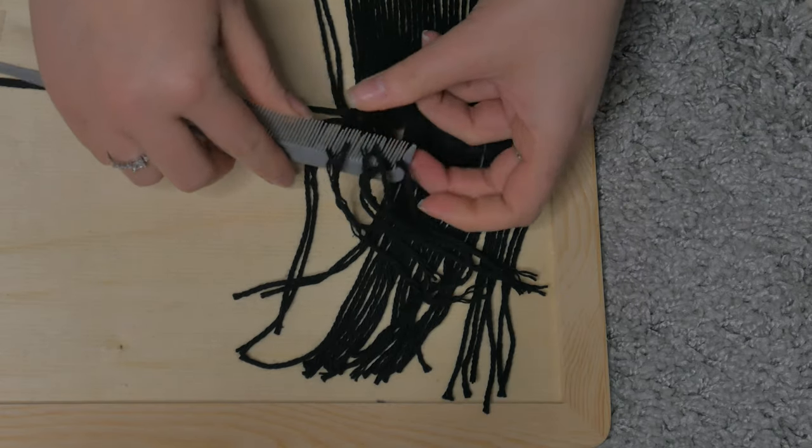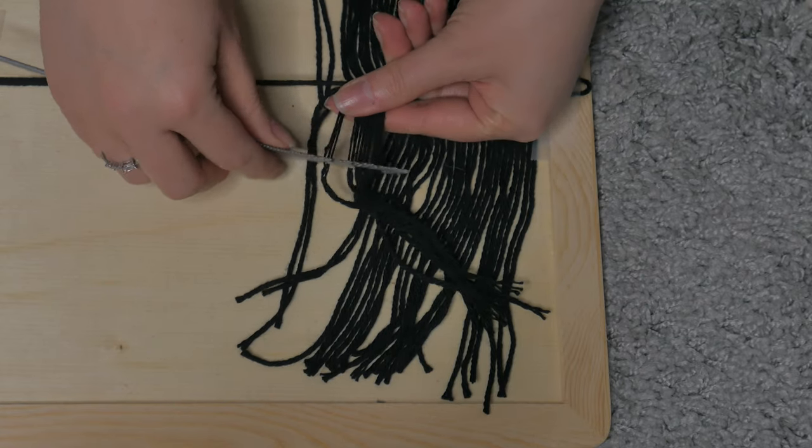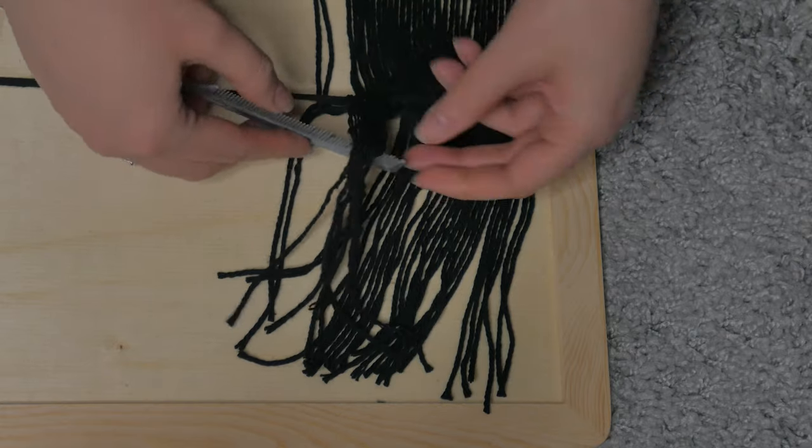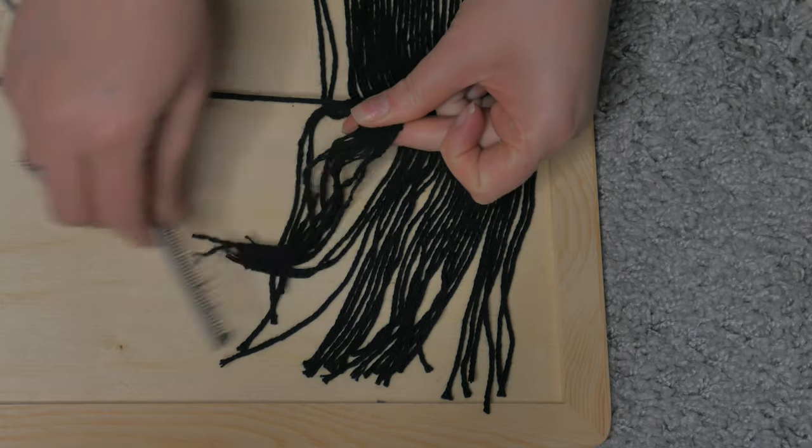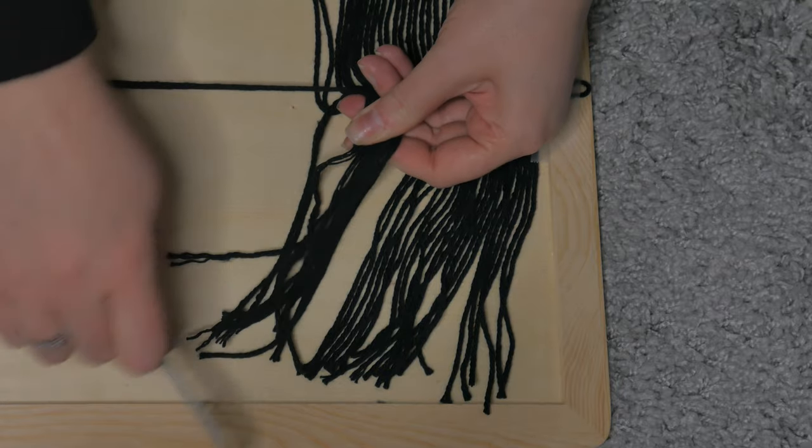So after all your rows are formed, this is where you're going to grab your comb and start combing out your pieces. And as they start to come apart, you'll see the different strands of yarn. And I like to start at kind of like the top there and work my way down.